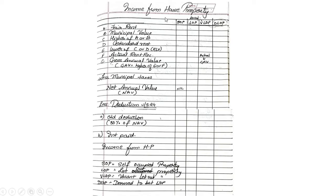Income from house property. Now there are four types of property that we can be given. One is called SOP, that is self-occupied. The other one is called LOP, that is let-out property, meaning property which is given out on rent for complete 12 months. VLOP is the property which has been vacant for a particular number of months in a year — so less than 12 months we are giving on rent. And DLOP is nothing but assumed LOP; it's like an LOP.